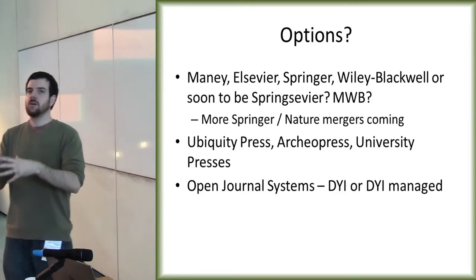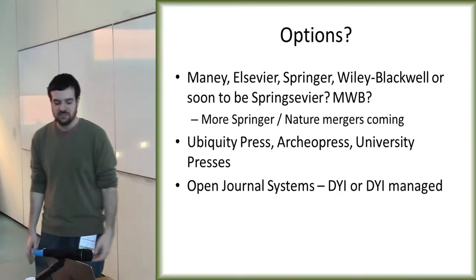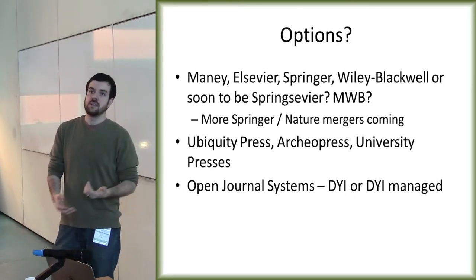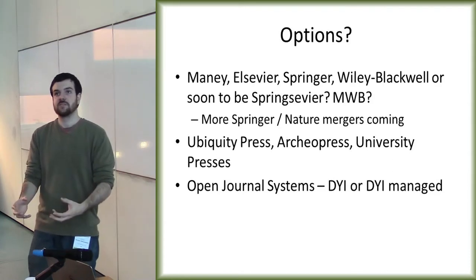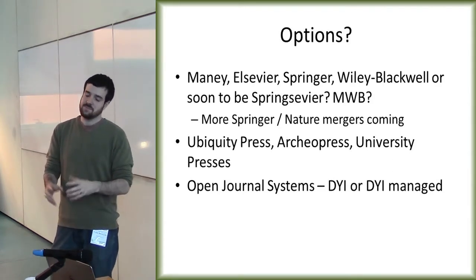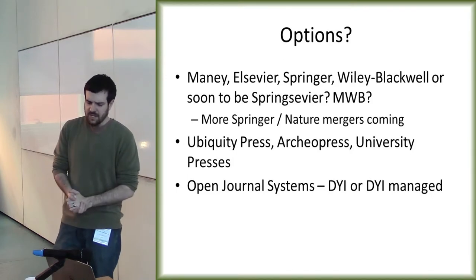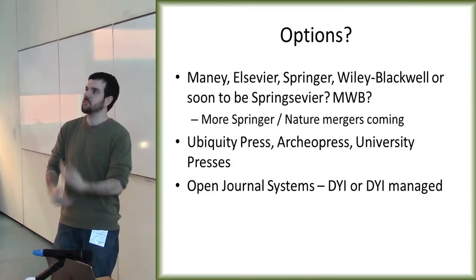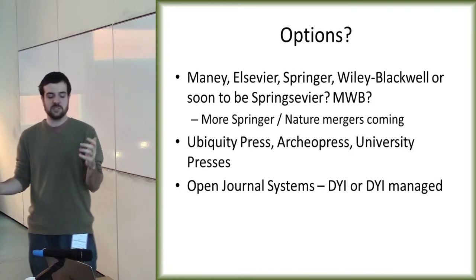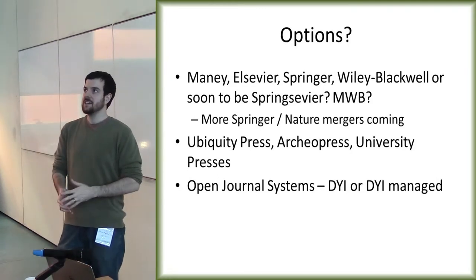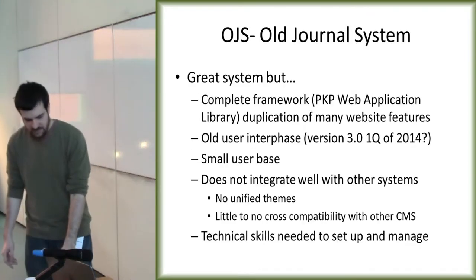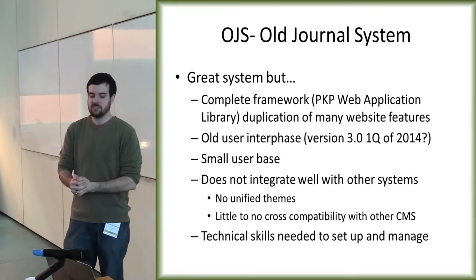Then you have your more boutique publishers — Ubiquity Press, Archaeopress, University Presses. They're very nice and very good, but they tend to be a bit small. If you're doing journal publishing, scale matters. And then you have the last option: do-it-yourself, which is basically Open Journal Systems — it's what everyone uses to do their publishing. And that's what I'm going to focus on for the rest of this talk, trying to solve some problems there.